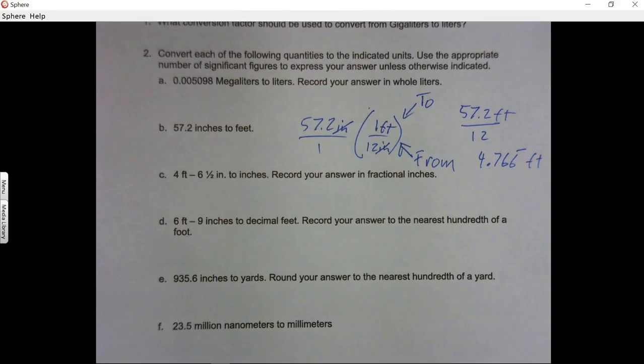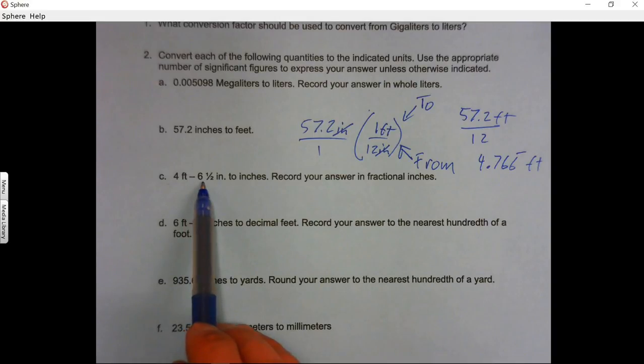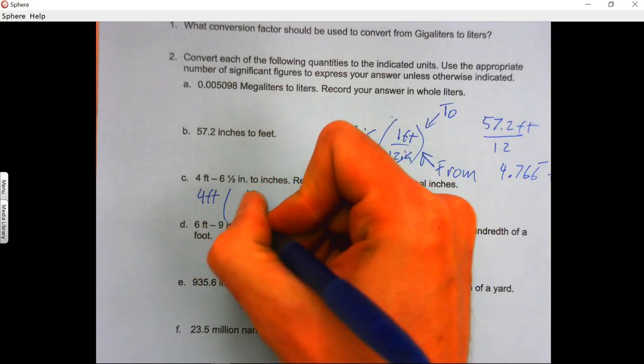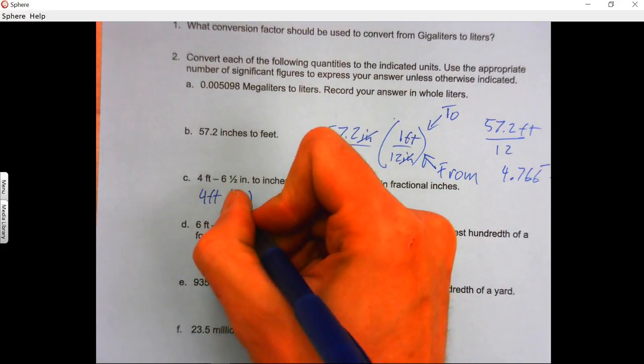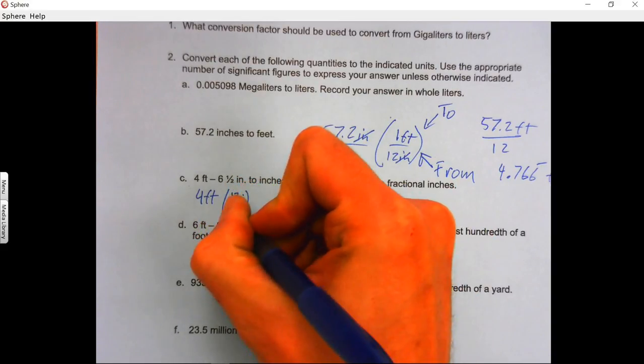The second example is actually a subtraction problem. You have to convert feet to inches first and then subtract the inches. So you go four feet. And again, we're converting from feet to inches, so that is 12 inches to one foot.